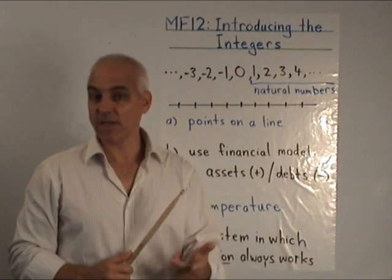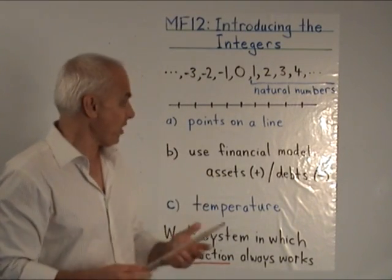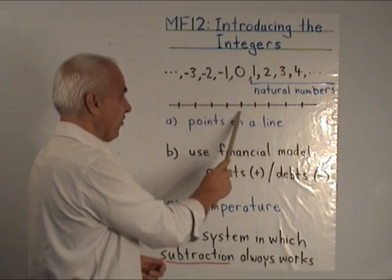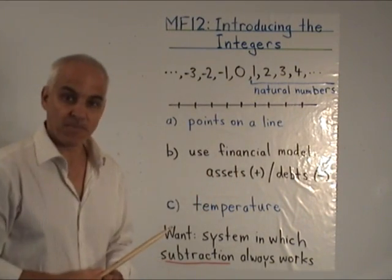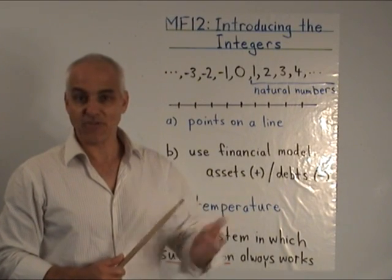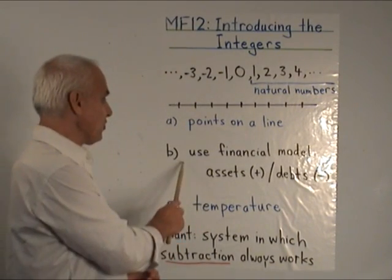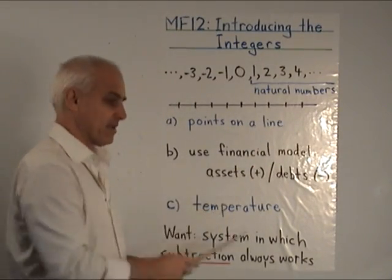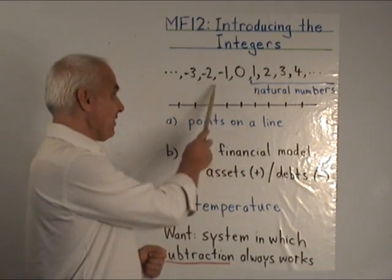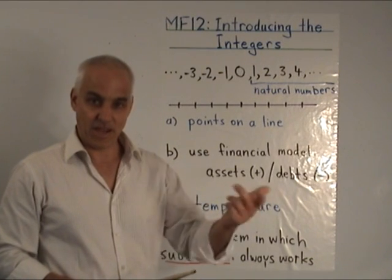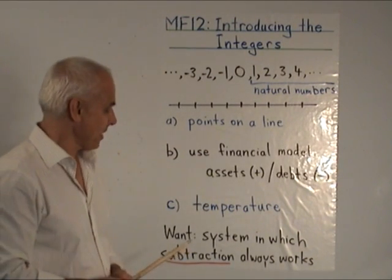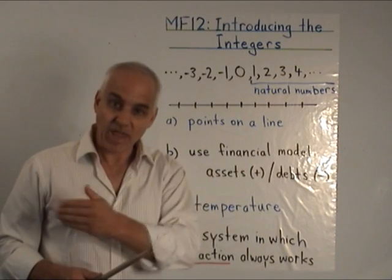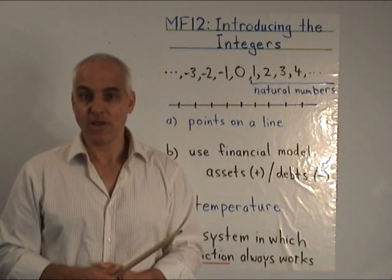There are a number of different possible ways of introducing this to young people. One of them is to use points of a line, and to think of these natural numbers and the negative numbers as just being points on a line extending both to the right and to the left. Another way is to use a financial model, where natural numbers correspond to assets — money that you own — while negative numbers correspond to debts, monies that you owe to somebody else. Yet another model would be temperature, where you can measure three degrees or minus five degrees — a scale that is sort of symmetrical about zero.